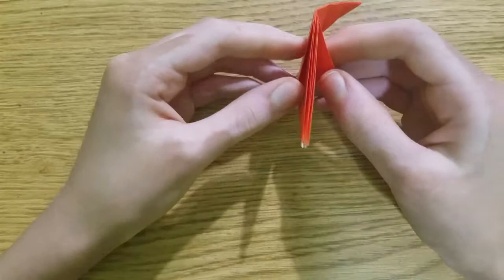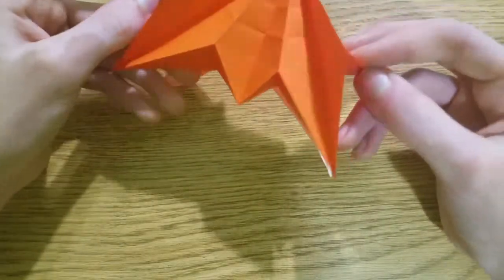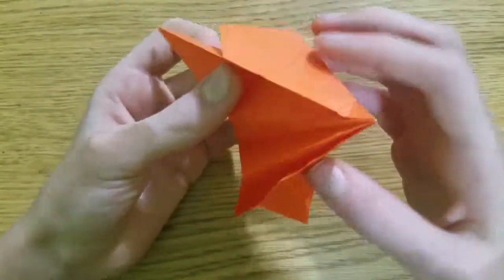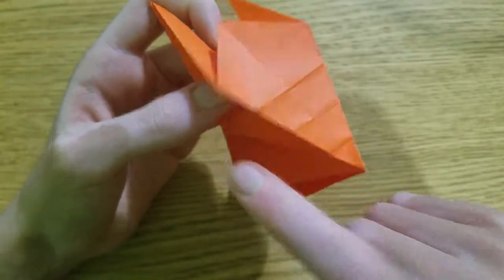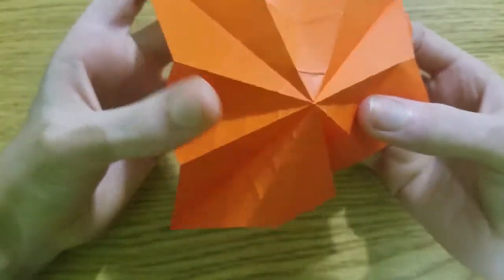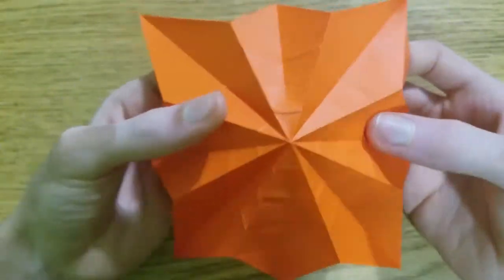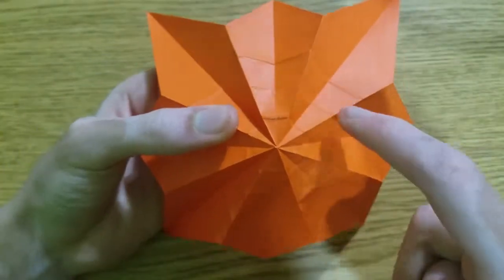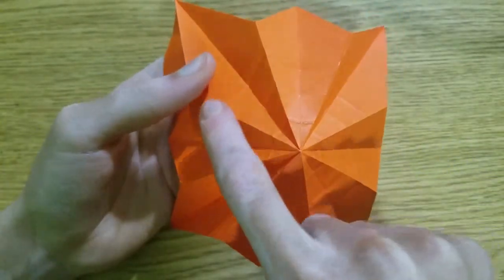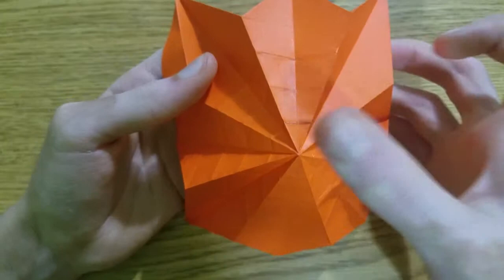Now we're going to open this up so we can sink it, starting with this outside crease. So unfold, not fully, but almost fully. And then we're going to make a mountain fold around this whole octagon we just made.